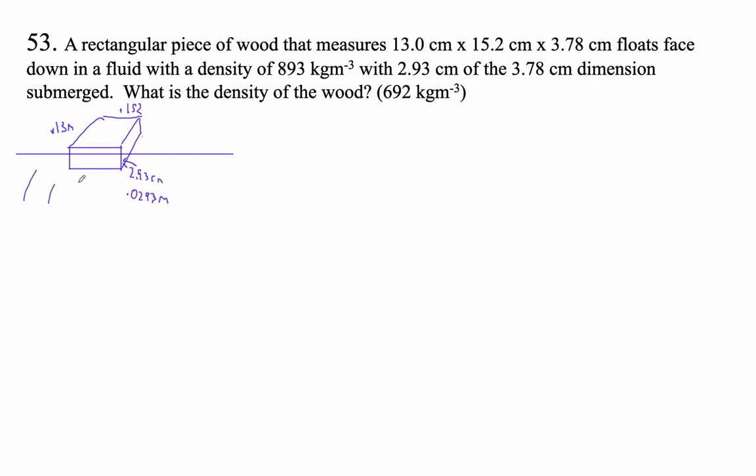Okay, and this fluid here has a density of 893 kilograms per cubic meter. What is the density of the wood? Okay, this isn't too bad. The density of the wood is going to be the mass of the wood divided by the volume of the wood.